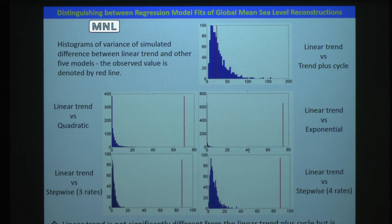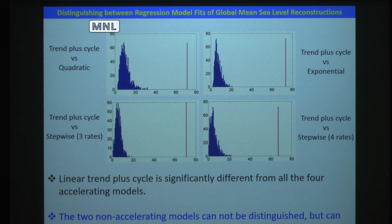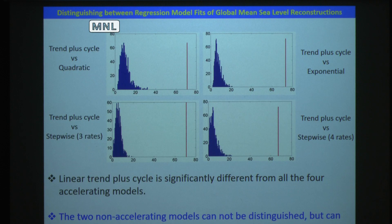Another non-accelerating model — linear trend plus the harmonic cycle — is compared with the four accelerating models. As shown in these figures, linear trend plus the harmonic cycle is significantly different from accelerating models. So the two groups of tests tell us that the two non-accelerating models cannot be distinguished from each other, but they can be distinguished from the accelerating models.